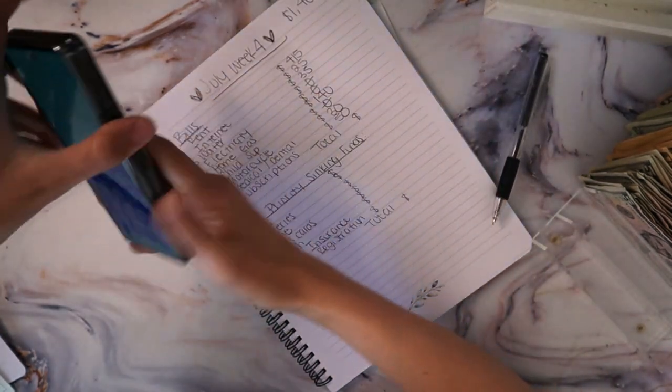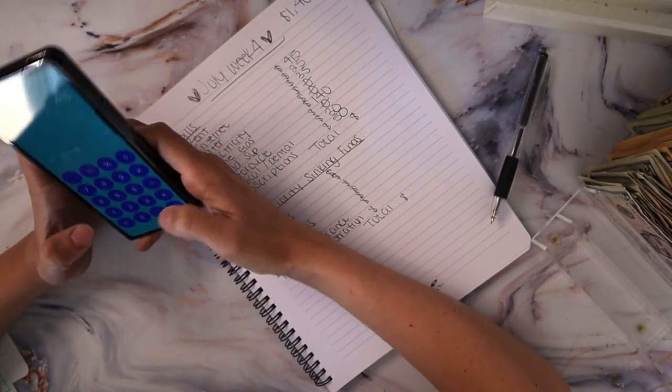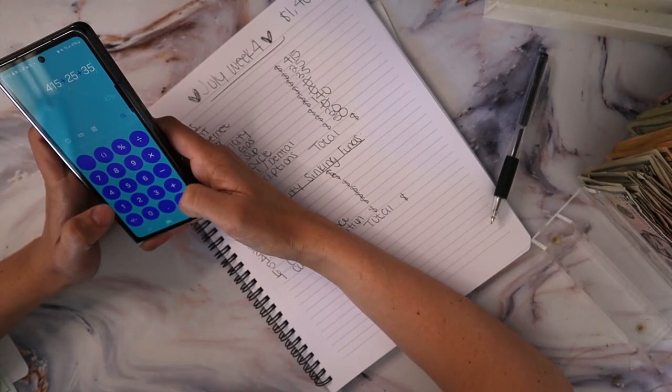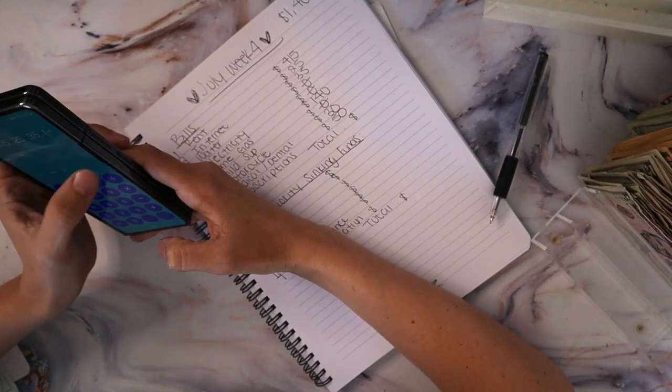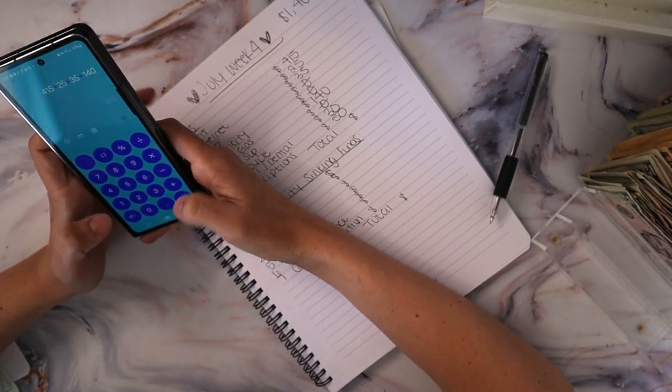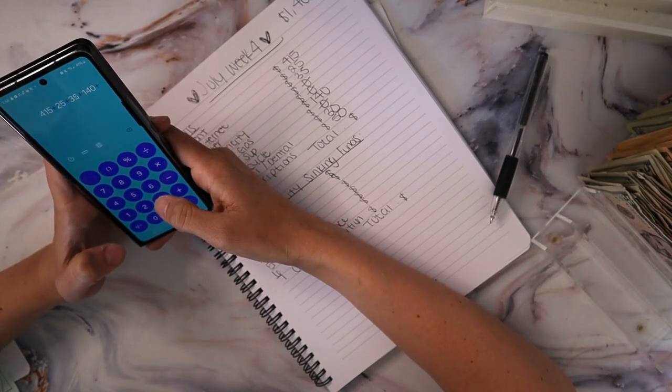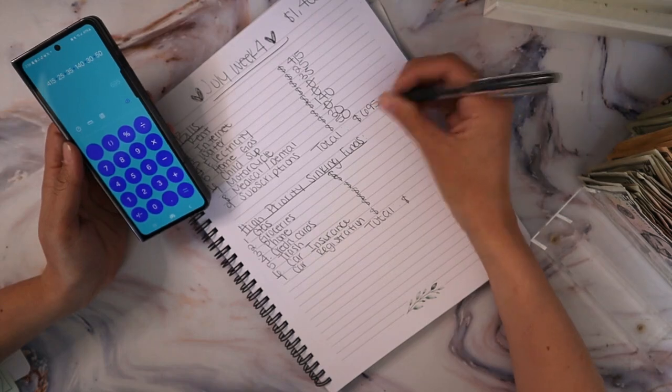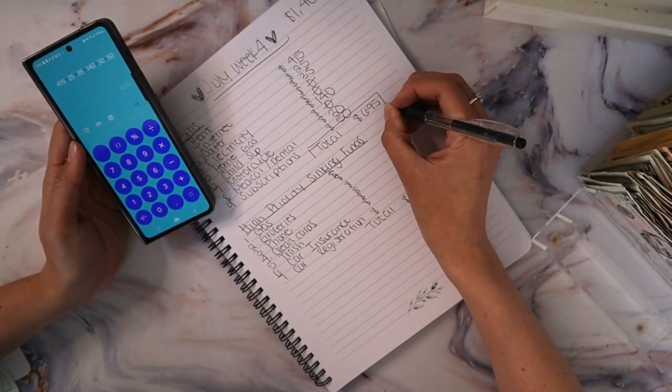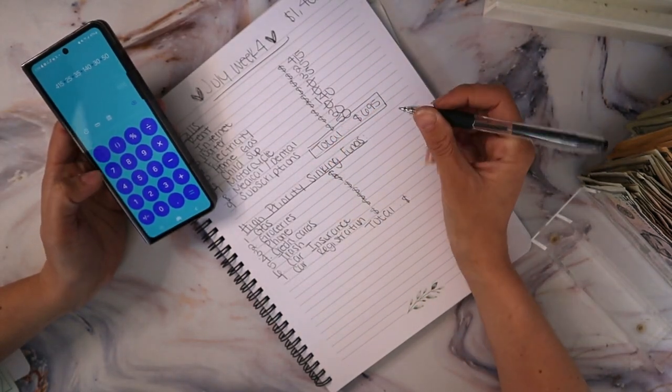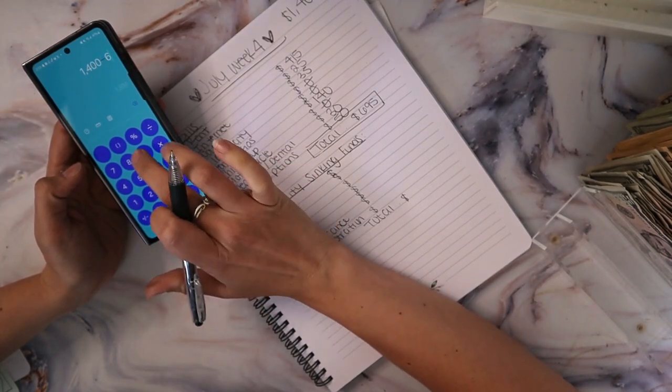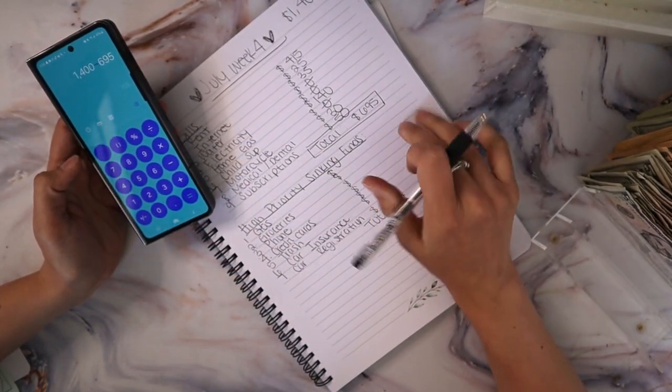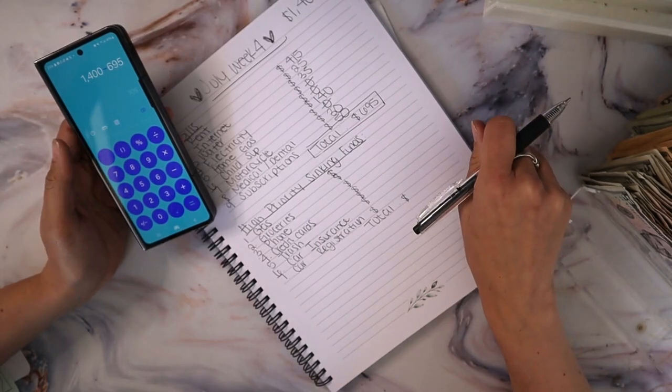So let's see what we're working with for my every month bills. So $25 plus $35 plus, no wrong button. $140 plus $30 plus $50. So we have $695 for bills. Okay. So then we have $1,400 minus $695. So we have $745 left that we're working with.